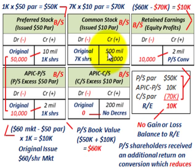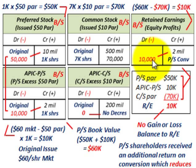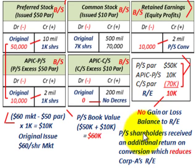When the common stock par value is greater than the carrying value or book value of the preferred stock, the difference goes into retained earnings — actually reducing our equity and profits by $10,000. There's no gain or loss; the balance goes to retained earnings with no recognition on the income statement. The idea is that the preferred stock shareholders receive an additional return on the conversion, which reduces Corporation A's retained earnings.